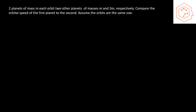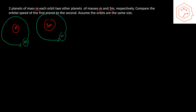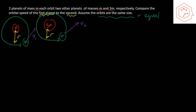For question one, we have two planets both of mass little m, orbiting two other planets of masses M and 3M respectively, at the same orbital radius r in both cases. We want to compare the orbital speed v1 of the first planet to the orbital speed v2 of the second planet.